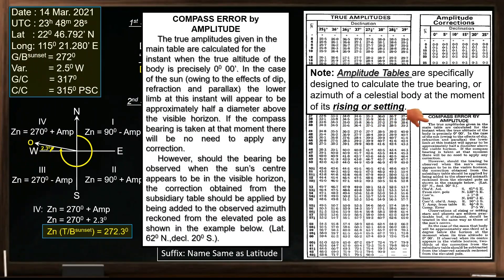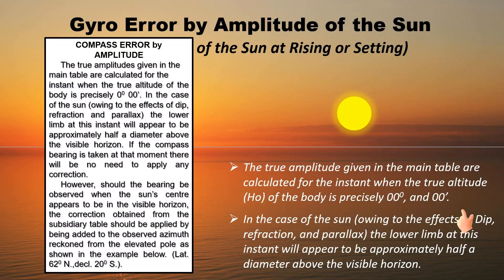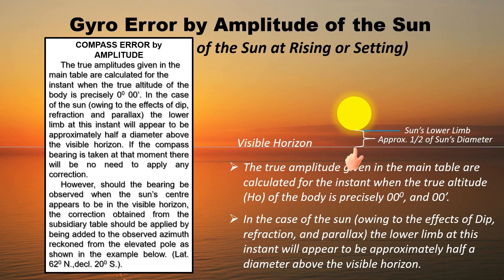It is stated in this table that the true amplitudes given in the main table are calculated for the instant when the true altitude of the body is precisely 0 degree, 0 minute. In the case of the sun, owing to the effects of dip, refraction and parallax, the lower limb at this instant will appear to be approximately half a diameter above the visible horizon.